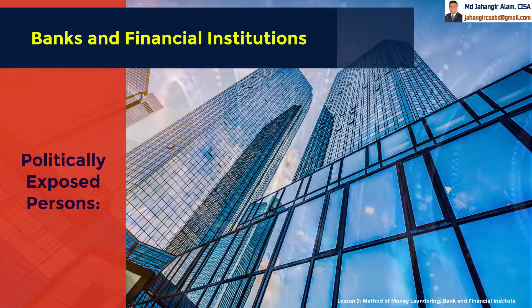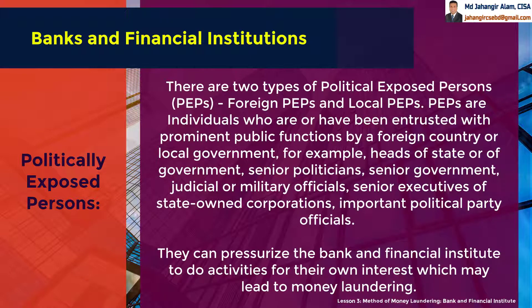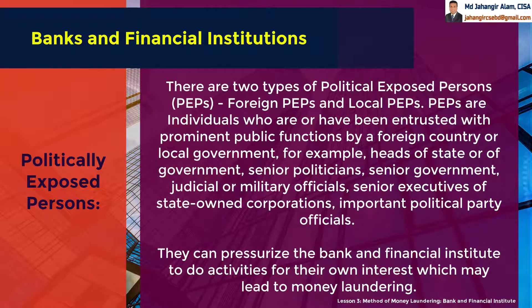Politically Exposed Persons. There are two types of politically exposed persons, or PEPs: foreign PEPs and local PEPs. PEPs are individuals who are or have been entrusted with prominent public functions by a foreign country or local government — for example, heads of state or of government, senior politicians, senior government, judicial or military officials, or senior executives of state-owned corporations or important party political officials. They can pressurize banks and financial institutions to do activities for their own interests, which may lead to money laundering.